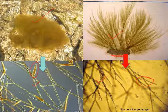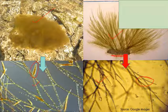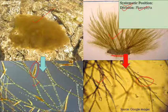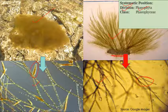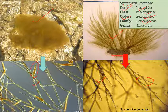Now let's discuss the systematic position of Ectocarpus. It belongs to Division Phaeophyta — 'phaeo' means brown, 'phyta' means plant — so this group contains the brown algae. The class is Phaeophyceae, order is Ectocarpales, family is Ectocarpaceae, and the genus is Ectocarpus.